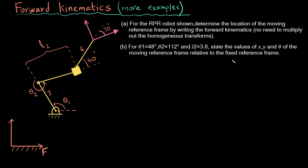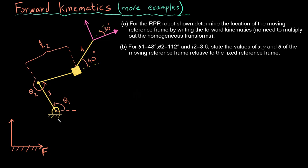Hi, this is Zain Khan here. We are going to do an even more interesting example of forward kinematics. Before we move on to the question, let me walk you through the robot. The first thing to know is that the fixed frame is not at the base of the robot but is placed at a distance — displaced four units in x and two units in y.